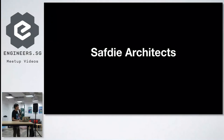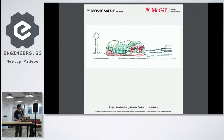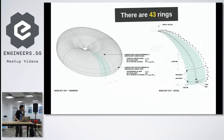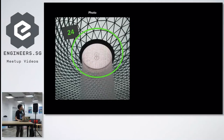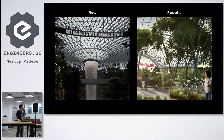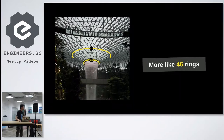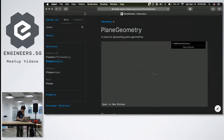It was created by SubD Architects, which has an archive, but it didn't help much. But as I scrolled down, I found more information: there are 43 rings and each side is different. There's a lot of mismatch between the photos and the real thing. Long story short, I think the 43 is incorrect — it's 46. So I recreated this in Three.js, and this is how it looks like.